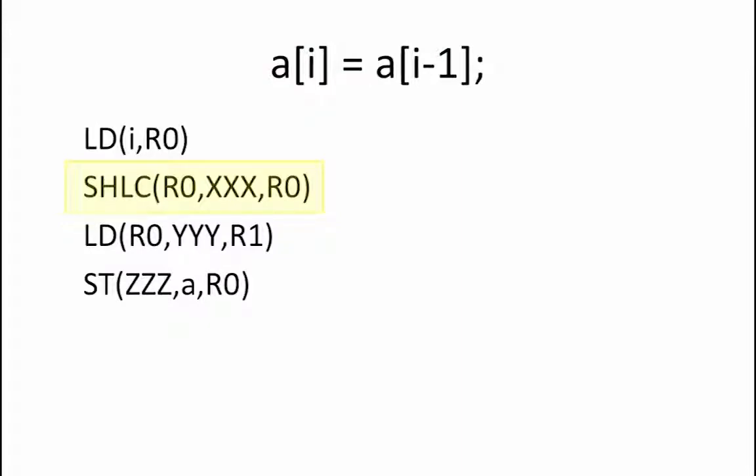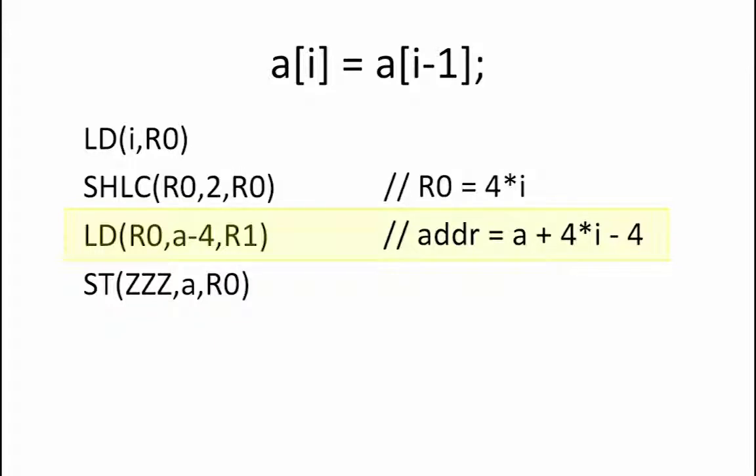As we saw earlier, shifting to the left by 1 bit is equivalent to multiplying by 2. So, here we shift to the left by 2 bits in order to multiply by 4. So, xxx equals 2. Now, that R0 equals 4 times i, in order to load A of i, we would load the location A plus 4 times i. In order to load A of i minus 1, we need to load the location that is 4 bytes before that. So, location A plus 4 times i minus 4. This means that in this load operation, which actually wants to load A of i minus 1, we need to set yyy equal to A minus 4.